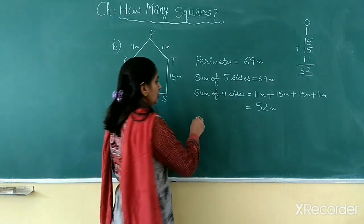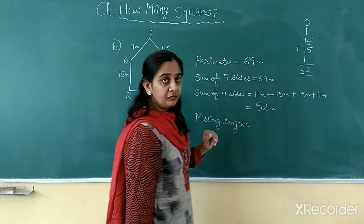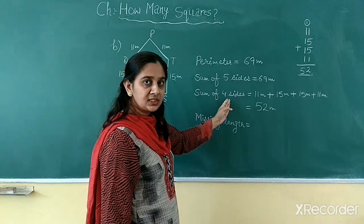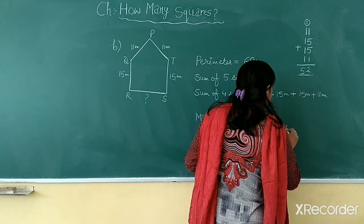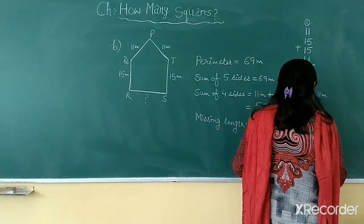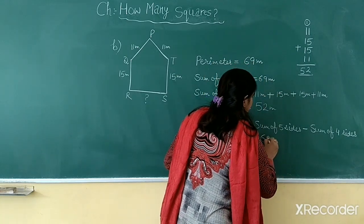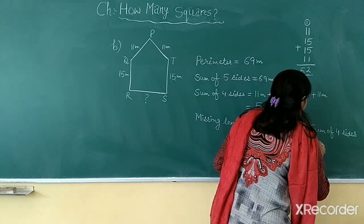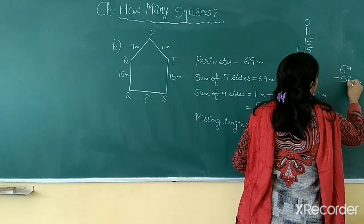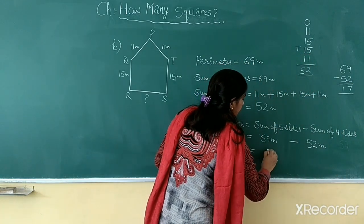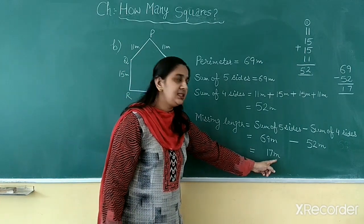We want to find out this missing length. Missing length is equal to: from the sum of 5 sides, subtract the sum of 4 sides, and then you will know the missing length. So, the sum of 5 sides is 69 meter. From this we will subtract the sum of 4 sides which is 52 meter. So 69 minus 52 will give you 17 meter. The missing side RS in this pentagon is 17 meter in length. This was part B.